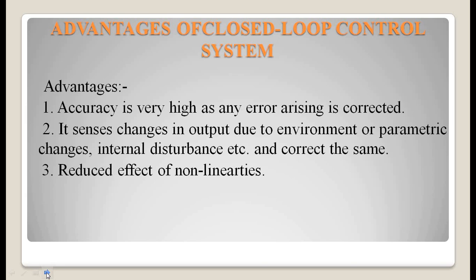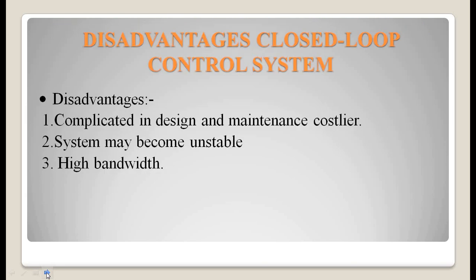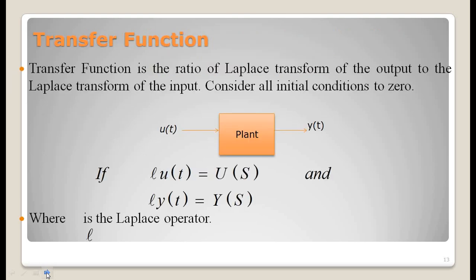Advantages of closed loop control systems: accuracy is very high as any error arising is corrected. It senses changes in output due to environmental or parametric changes and internal disturbances, and corrects them. It also has a reduced effect of nonlinearities. Disadvantages: it is complicated in design, maintenance cost is higher, the system may become unstable, and it has high bandwidth requirements.